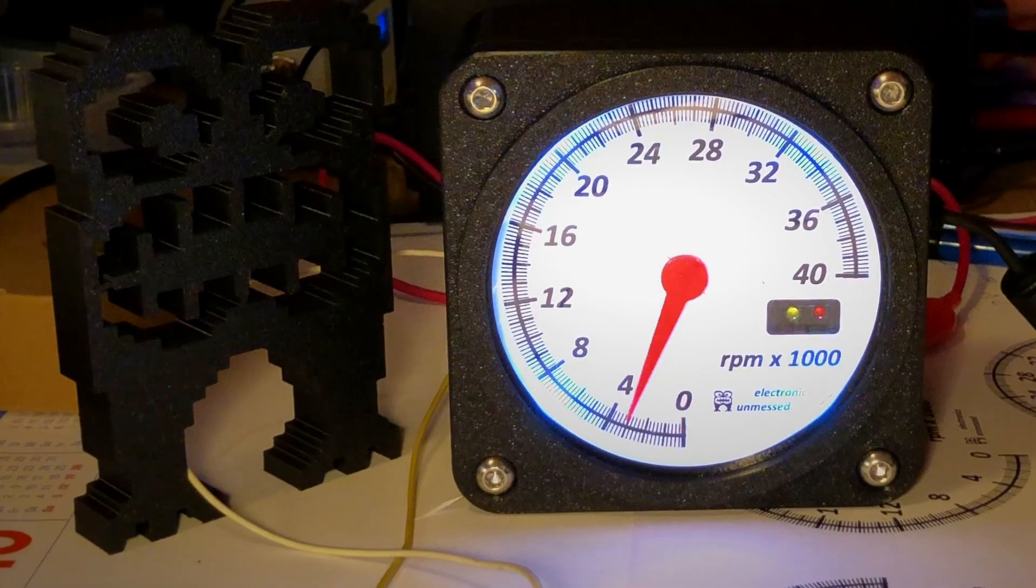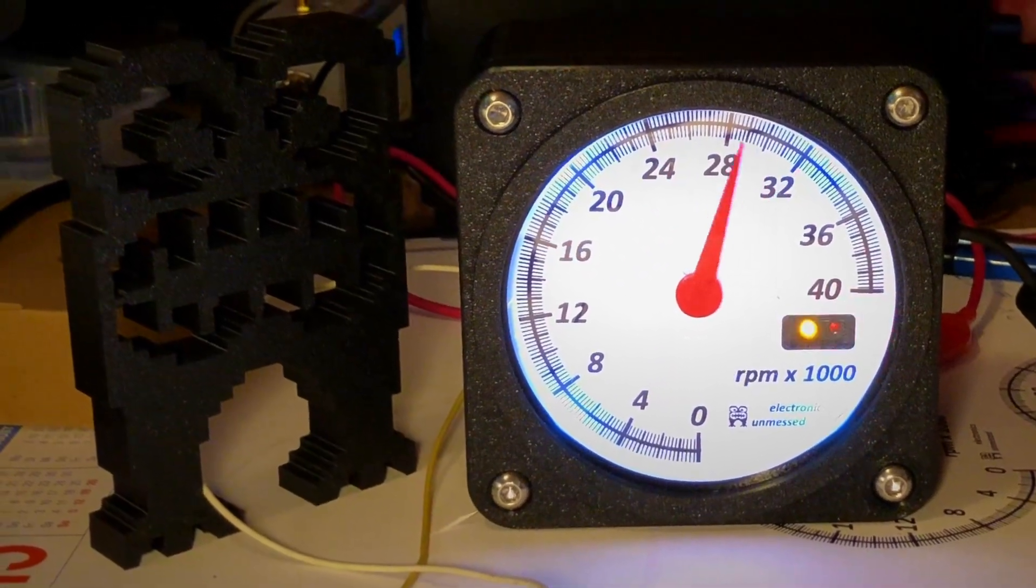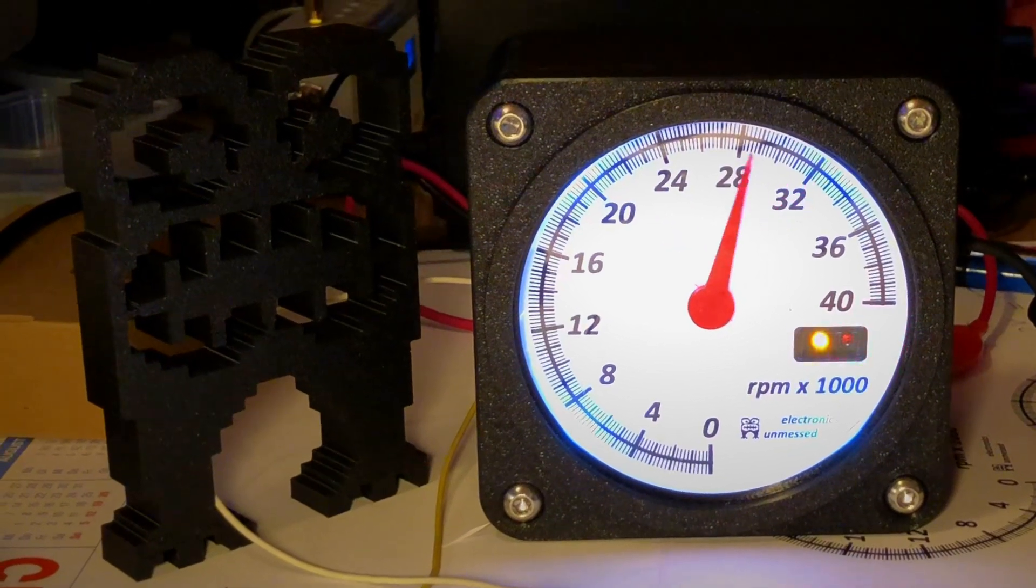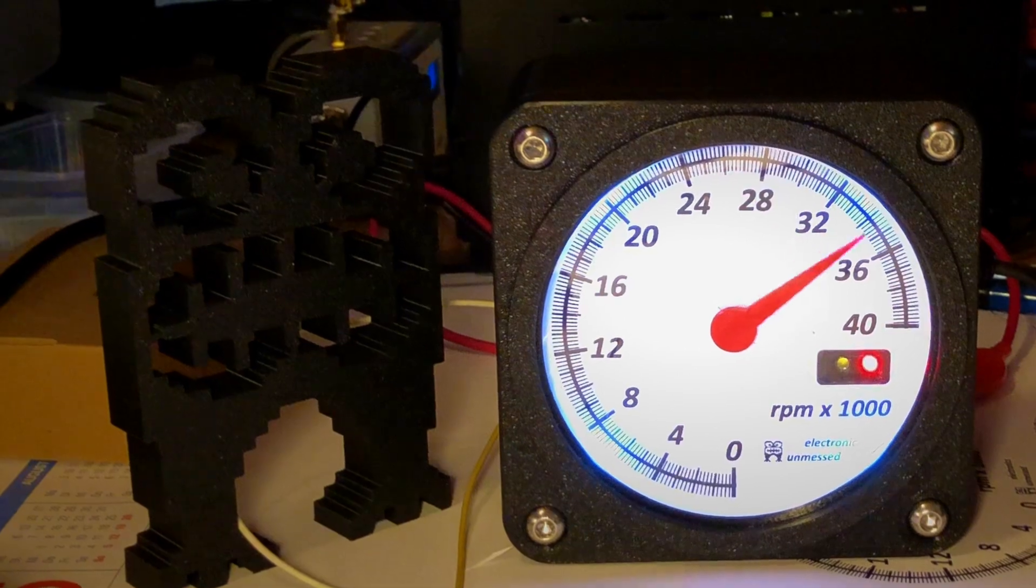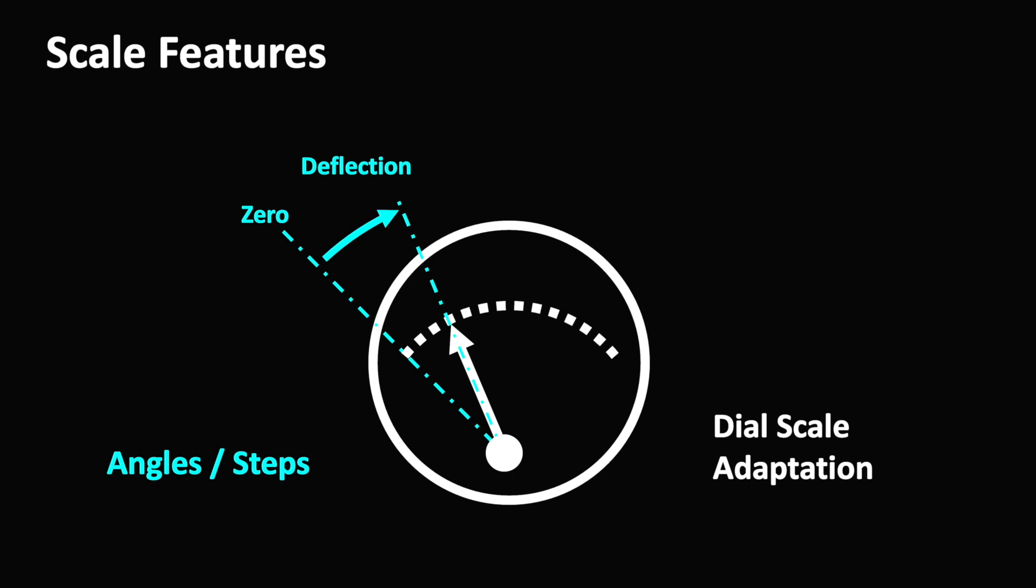A stepper motor is simply performing steps forward or backward. It's not giving any position information. To create an analog display, we need a zero point from which we are defining the deflection as a number of steps.